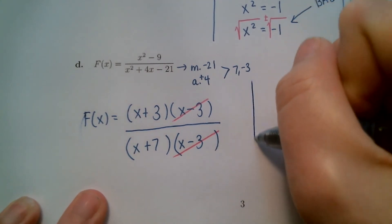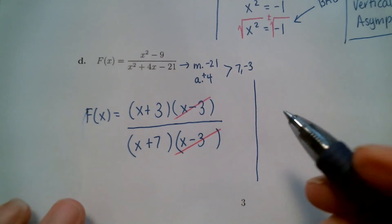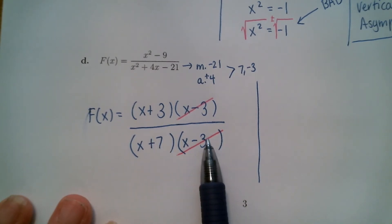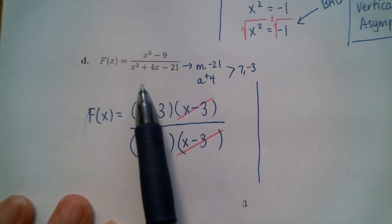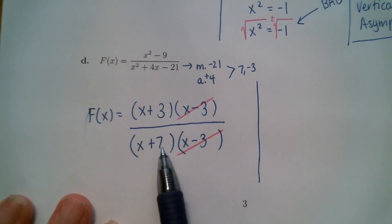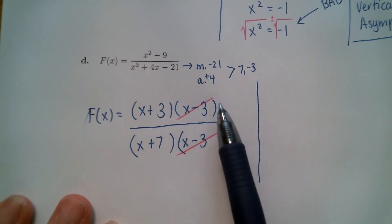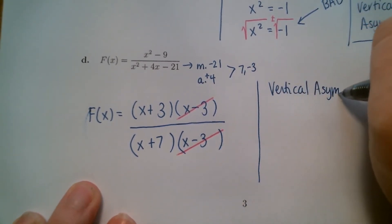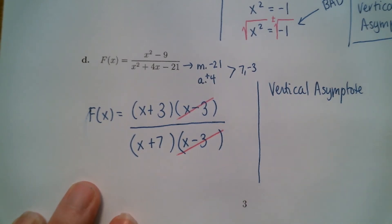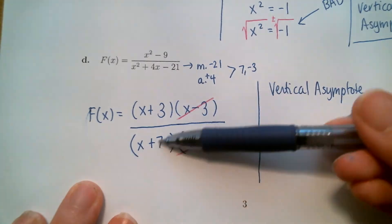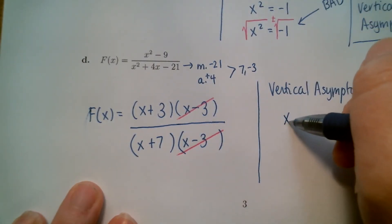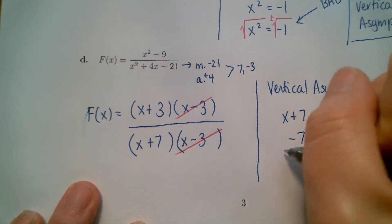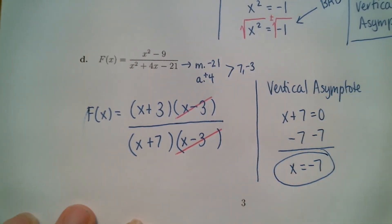To find the vertical asymptotes, you want to get the bad spots. There should be two bad spots when you look at the denominator and set it equal to zero and solve — after factoring, the bad spots would be negative 7 and positive 3. But the rule is: factor the top, factor the bottom, cancel if you can, and then work with what's left. So the only vertical asymptote results from taking x plus 7 and setting it equal to zero. Our vertical asymptote is x equals negative 7, and that's the only one.